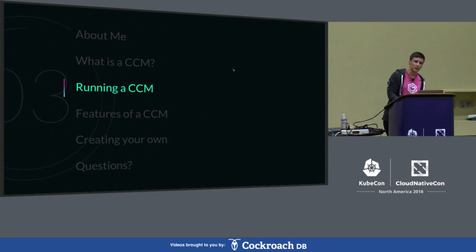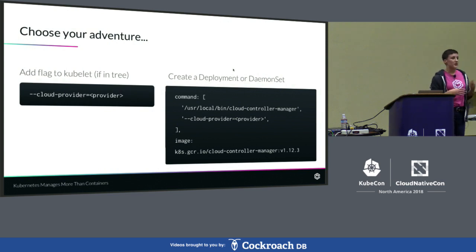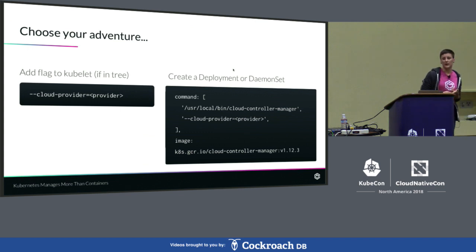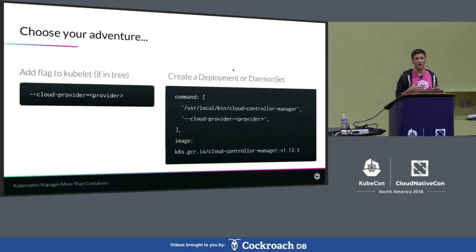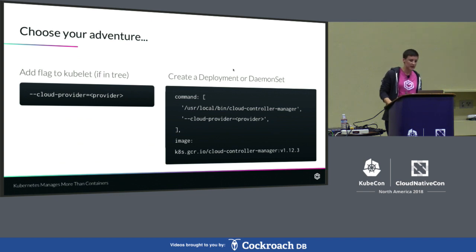It's important to know how to run one and what happens when you do. There are two different types of CCMs: in-tree and out-of-tree. If it's in-tree, the code is actually in the Kubernetes repo and is built as part of the binary when you deploy your Kubernetes cluster. If it's out-of-tree, it is not in the Kubernetes repo — it's in a separate repo. An example of this would be DigitalOcean as well as Oracle. When you run an in-tree provider, one way you can run it is by specifying the cloud provider flag on your kubelet. If it is out-of-tree, you can specify it in a deployment or daemon set by running that image and pulling in the CCM, again with the cloud provider flag.